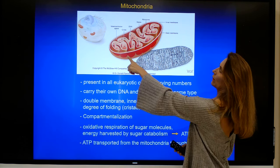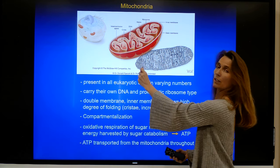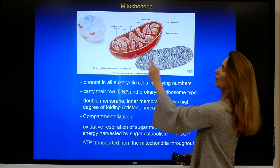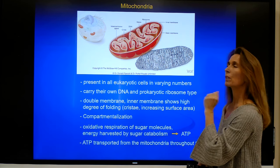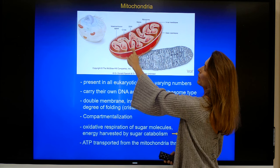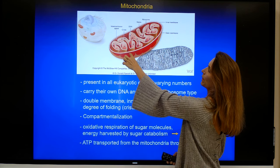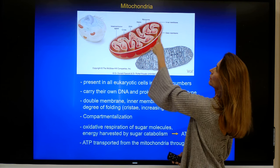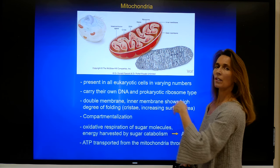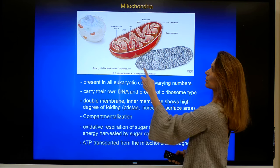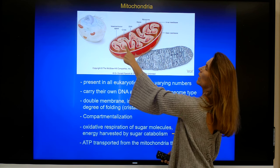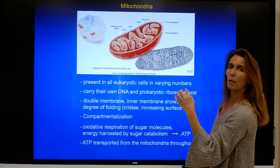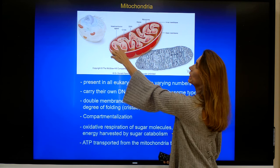Looking at this cartoon drawing, you can see the outer membrane and the inner membrane. There are two different compartments within the mitochondrion. There is the compartment surrounded by the outer membrane and the inner membrane, shown here in darker. And then there is a separate compartment — the lumen, the inside of the inner membrane.